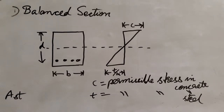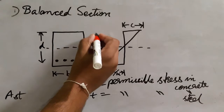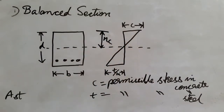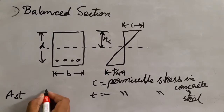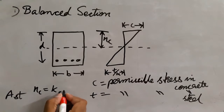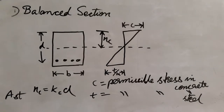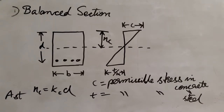The neutral axis is at the critical (balanced) location. The stresses in steel can be defined at permissible limits. In a balanced section, the moment of resistance due to the compressive force equals the moment of resistance due to the tensile force in steel.